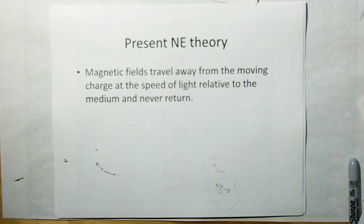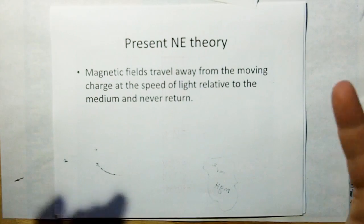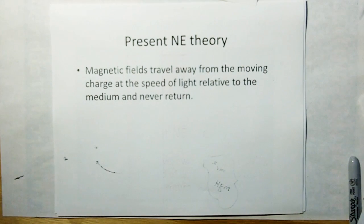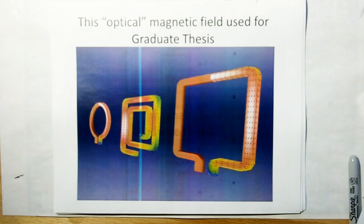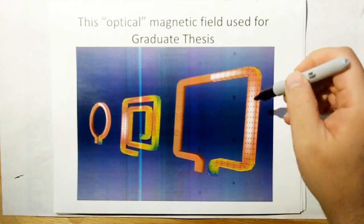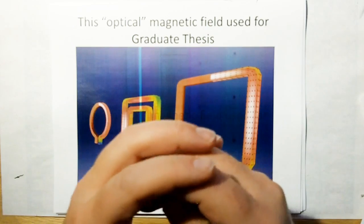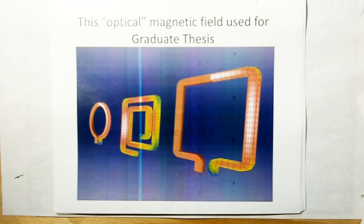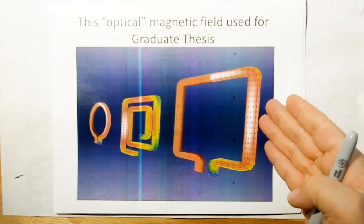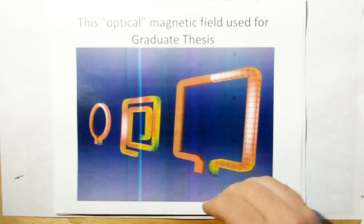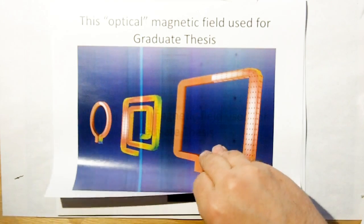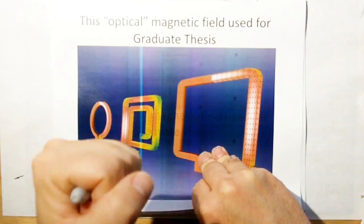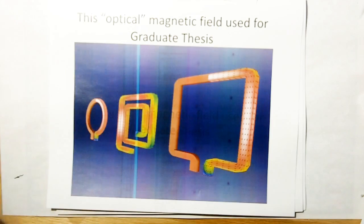What we have for present new electromagnetic theory is that magnetic fields travel away from the moving charge or the source that creates them at the speed of light relative to the medium, and never return. This is like an optical theory of a magnetic field. I use this optical theory of a magnetic field to great success with my graduate thesis, where I computed the inductance of inductors by considering all of the charges in the inductor — the field from each little point charge emanates spherically and then goes on forever and never comes back. With that, you can get excellent agreement with how inductors work and how they're measured in the lab. You don't need to have a collapsing field to get your energy back out of an inductor. So that theory is completely blown away — it's completely unnecessary. It works as if the energy from the charge goes out like light and never comes back, and it works just as good.